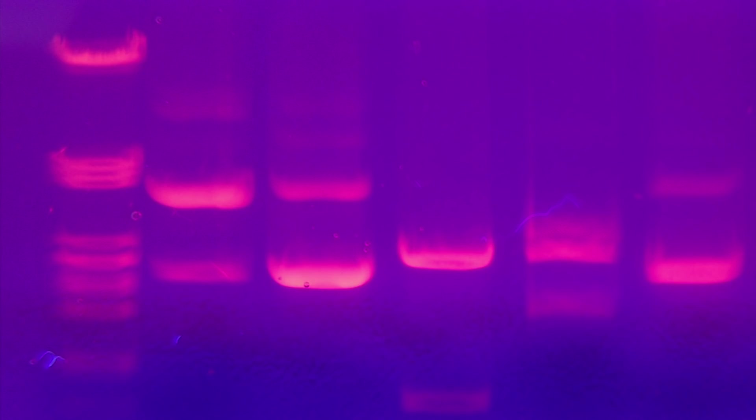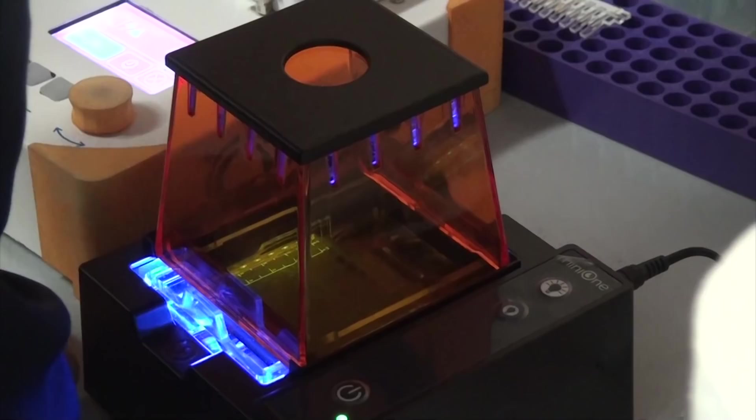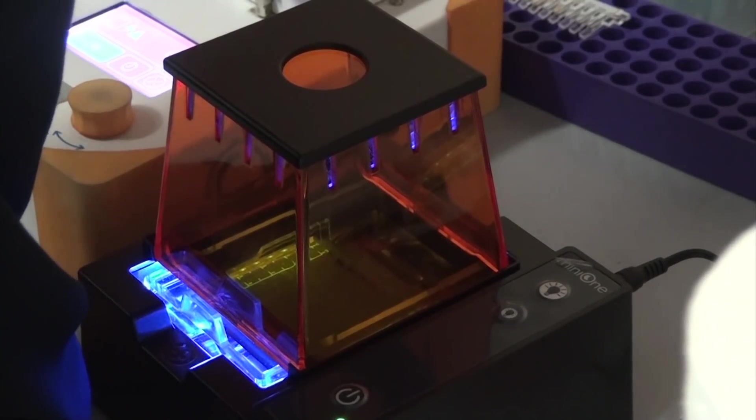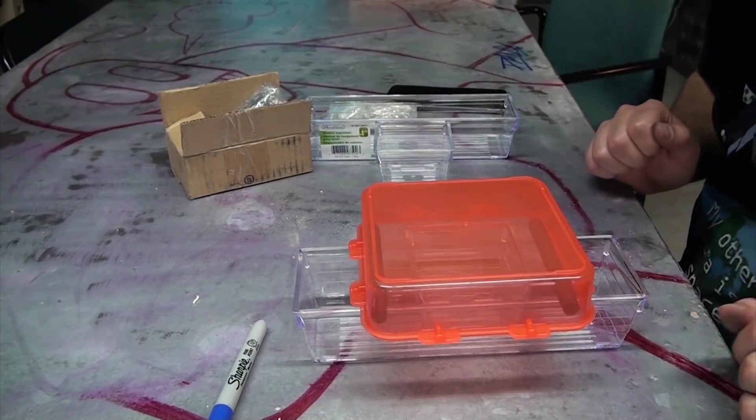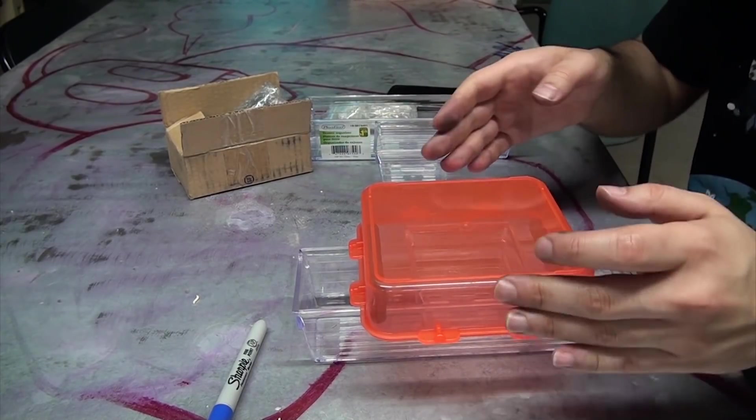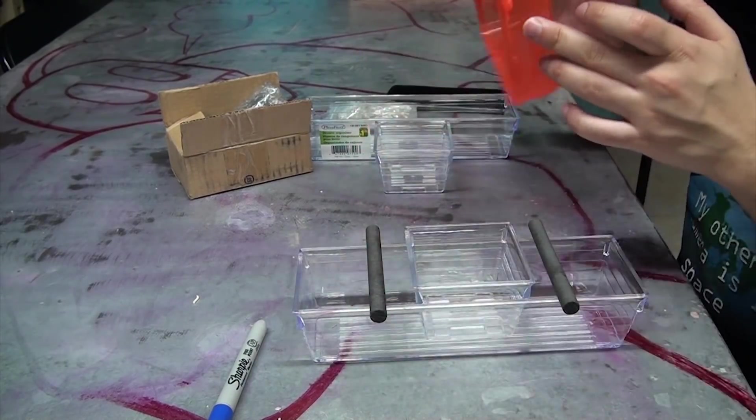The last thing we need to talk about is how you actually visualize the gel when it's done. In systems like the mini one, there's a bluish or UV light built into the box and an orange lid which blocks the UV, allowing the fluorescence from the gel stain to shine through. This is known as a transilluminator. This is why I picked up that orange Tupperware, to act as a UV shield. I'm not sure if it really works though, so I'll keep you posted on that.